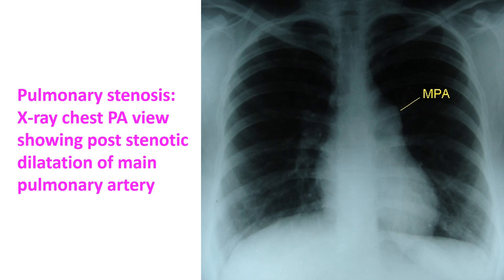ECG shows right ventricular hypertrophy and strain pattern in severe PS. Chest X-ray shows dilatation of the main pulmonary artery, post-stenotic dilatation, and the left pulmonary artery. The right pulmonary artery is not dilated in pulmonary stenosis.